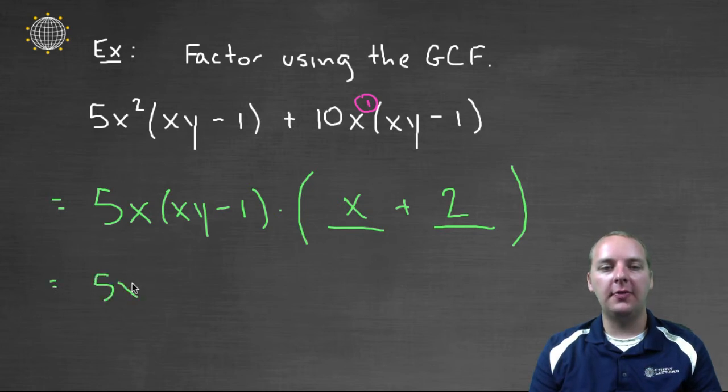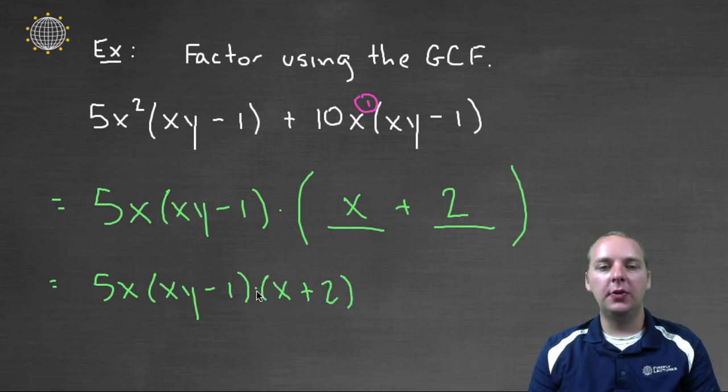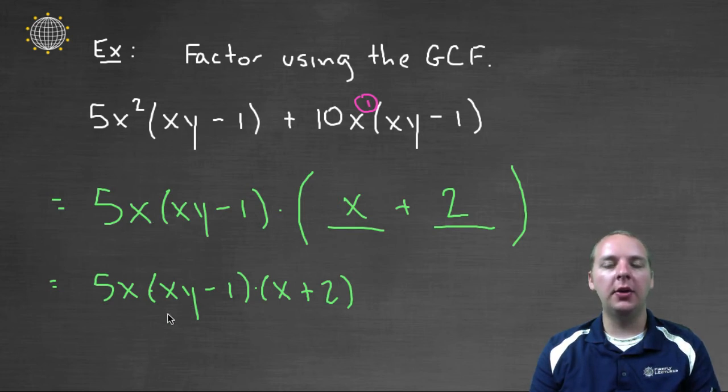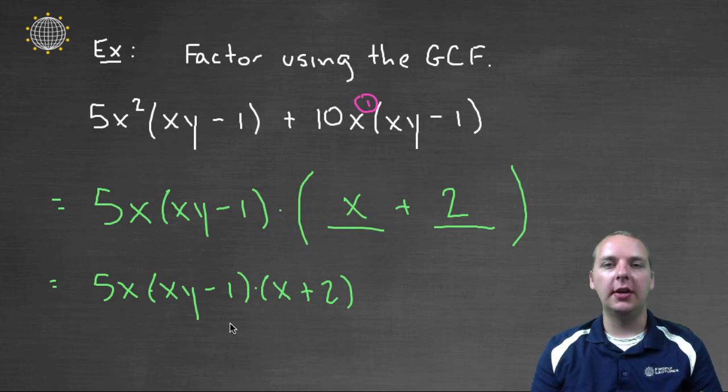Our final answer would be 5x times xy minus 1. Those were the common factors that we pulled out. And times x plus 2. And so we've created a product of this original polynomial that we had up here. And so we're done. This is a factored form for this original expression that we had up here. So anyways, that's how we factor using GCFs.